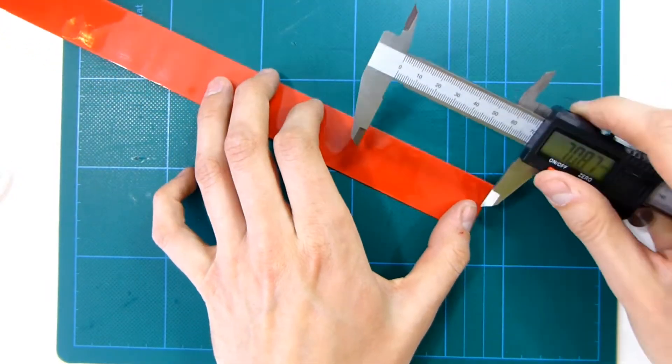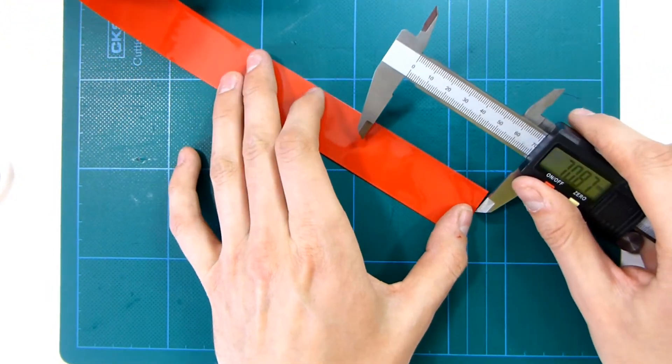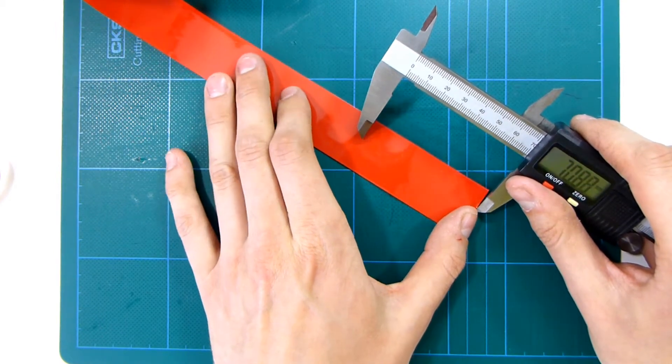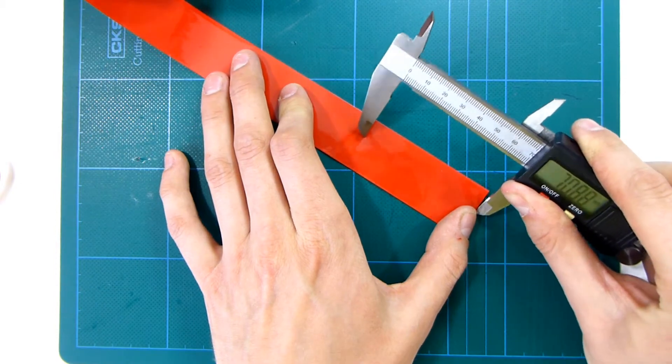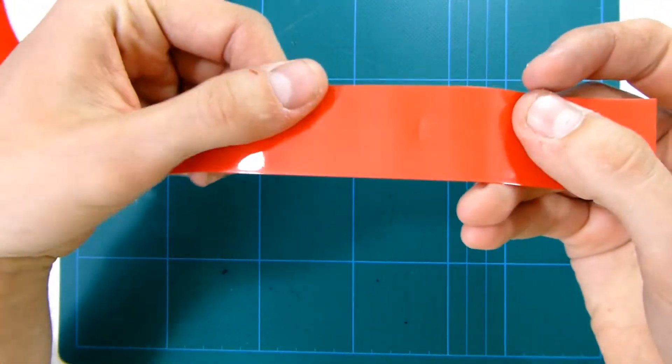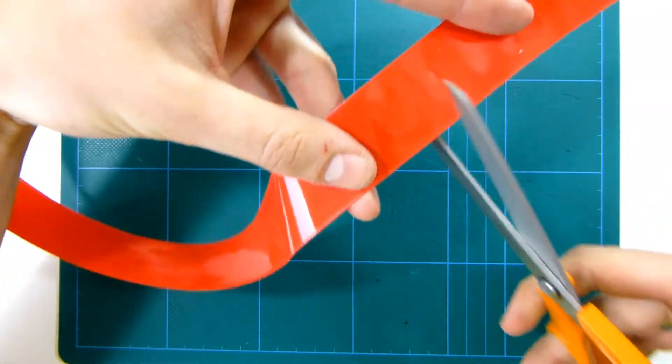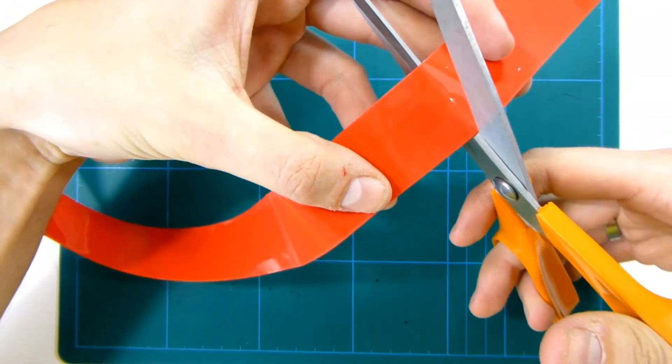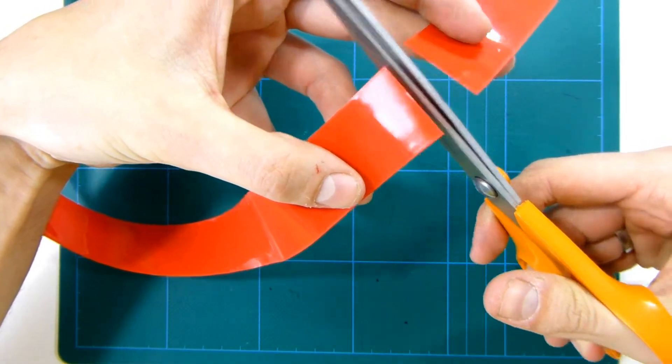The good thing about these calipers is that since this edge is quite sharp you can just put one edge by the edge of the wrapping and then make a score mark. So now we have a score mark as you can see. Take some scissors and then cut as straight as possible.